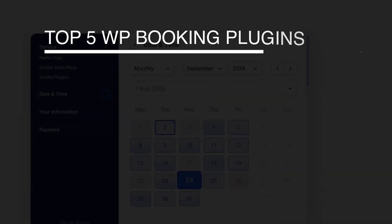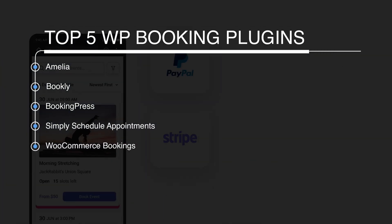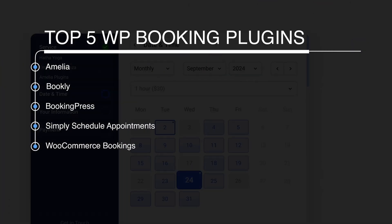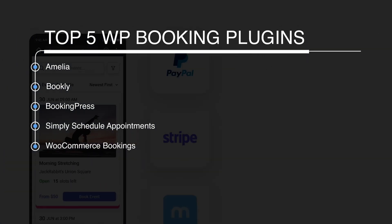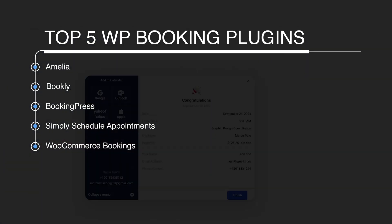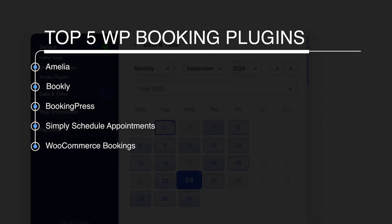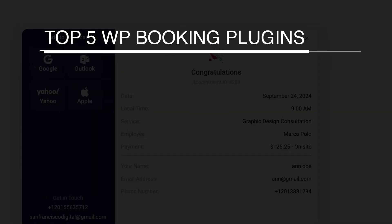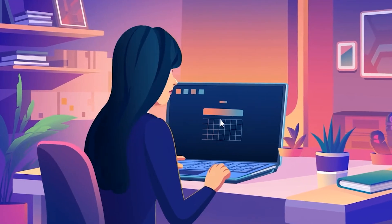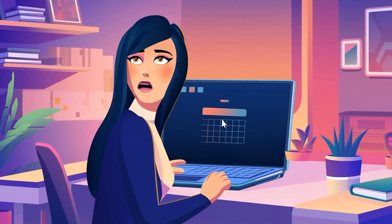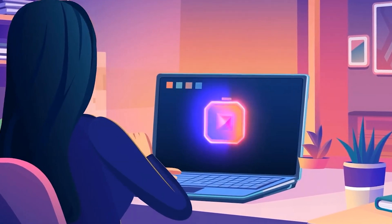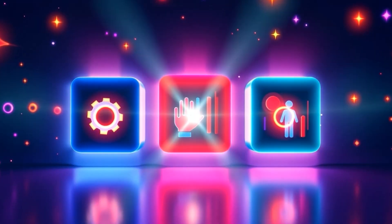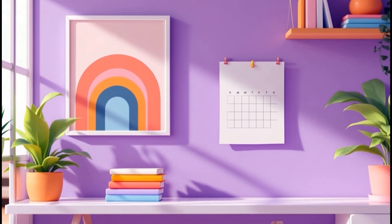To recap: Amelia is the one to beat for its beautiful design. Bookly is for those who need ultimate flexibility and modularity. BookingPress is a powerful, all-in-one solution. Simply Schedule Appointments is for speed and simplicity. And WooCommerce Bookings is the top choice if you're already in the WooCommerce ecosystem. The best plugin for you isn't the most popular one — it's the one that aligns with your specific needs. Start with your checklist of must-have features, consider your budget, and then choose the tool that will help your business thrive.